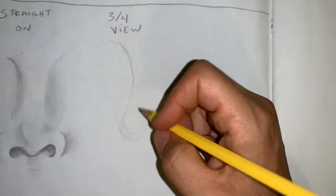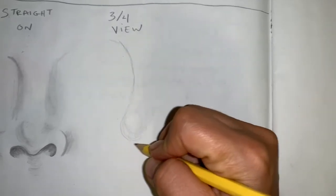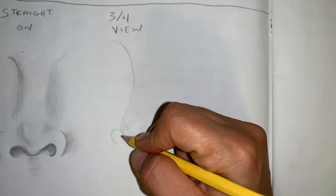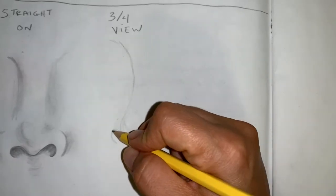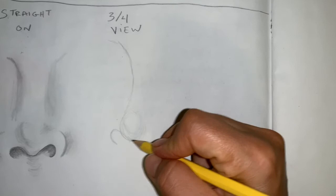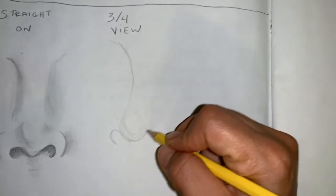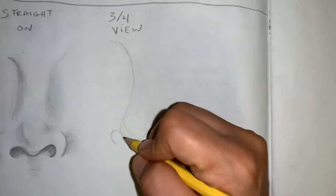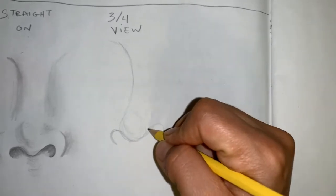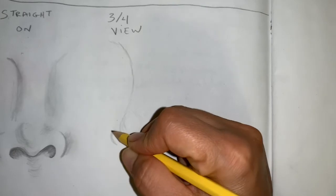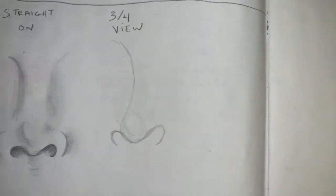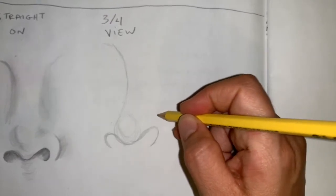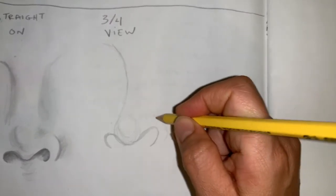On this side we're going to bring the nostril out, sort of that hook shape we had on straight on. We'll go over here and do the same idea. This side will be a little bit wider because it's closer to us. We'll start to figure out our final line. This is just the basics, and then we'll start to add in the details like the top of the nostril here.